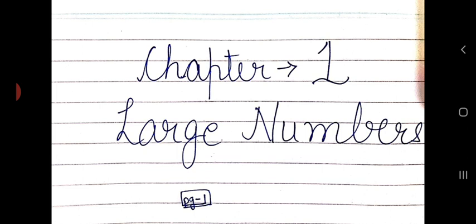On the very first page, you are going to put the date on the top left corner and then write the chapter number and name of the chapter in the middle of the page.